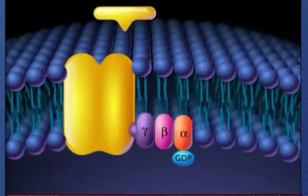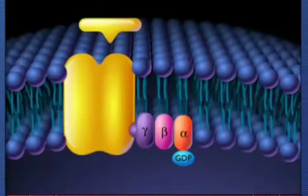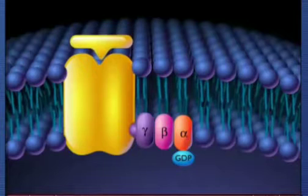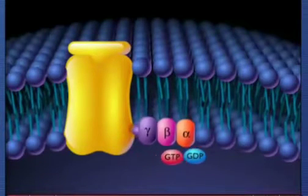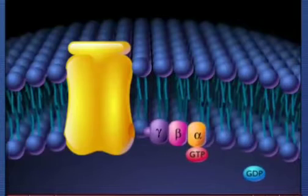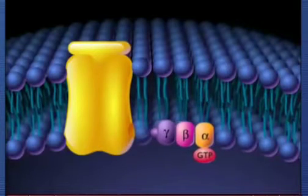When the ligand binds to the receptor site on the outside of the cell membrane, the G protein changes conformation and guanosine triphosphate replaces the guanosine diphosphate on the alpha subunit of the G protein.